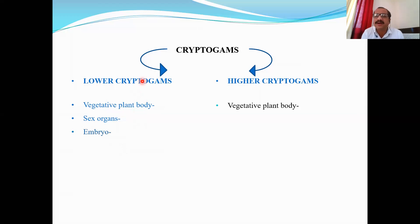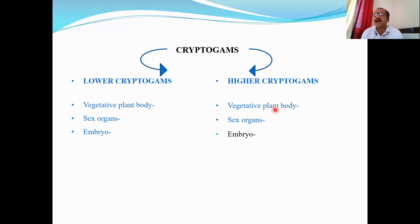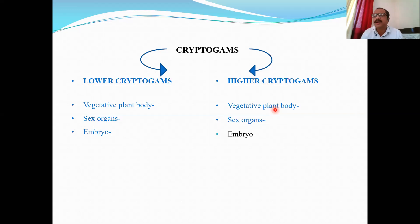In higher cryptogamae, the vegetative plant body is either slightly differentiated or fully differentiated into root, stem, and leaves. In some plants the body resembles root-like, stem-like, and leaf-like structures, while in others true roots, stems, and leaves are present.